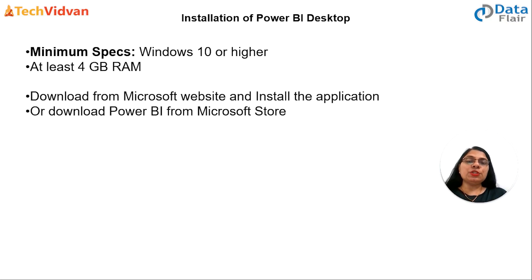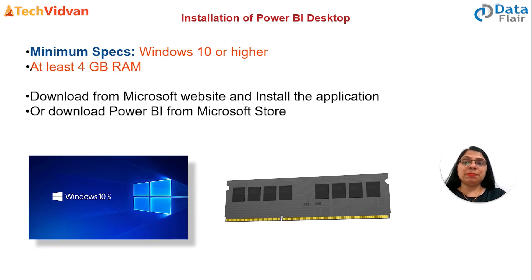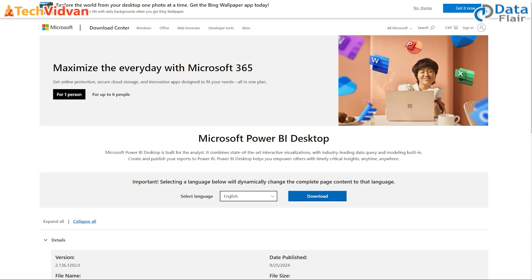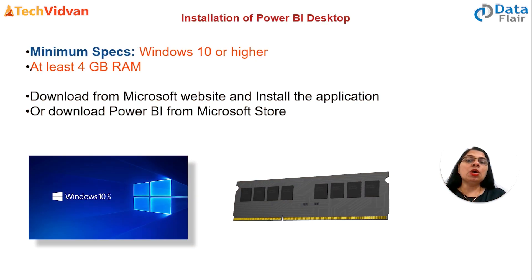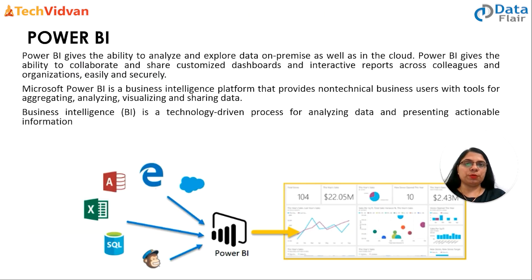Now let me introduce what is Power BI. Before introducing Power BI, we should know how to install the application. The minimum specifications you need are Windows 10 or higher and at least 4 GB of RAM. You can download Power BI either from the Microsoft website and then install the application, or you can also download Power BI from the Microsoft Store.